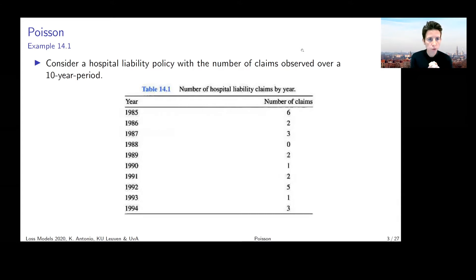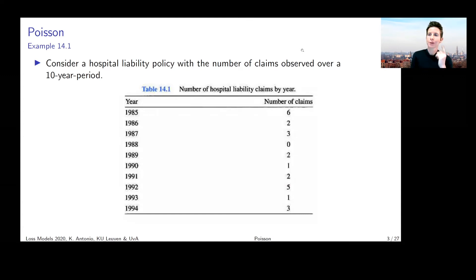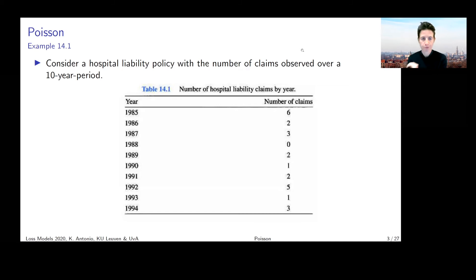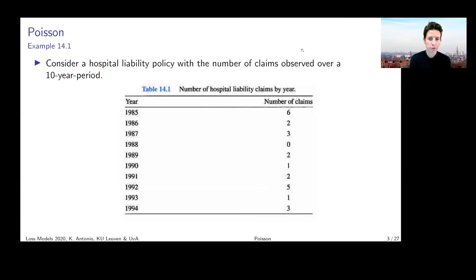The first example concerns hospital liability policies with the number of claims observed over a 10-year period. We are going to look at one policy and follow it over 10 years, from 1985 to 1994, listing the number of claims reported per year on this policy.